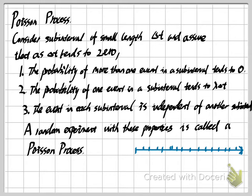So that means when the subinterval goes to zero, no more than one event will happen — you can think of it as two events cannot happen at the same time. The second requirement is that the probability of one event in a subinterval tends to lambda times delta t. Lambda is an important parameter in Poisson random variables — it gives information about the mean and how many successes we expect. This means as the length of the subinterval increases, there is a higher chance of finding one event.